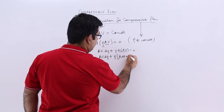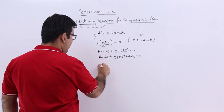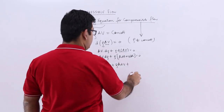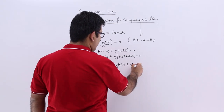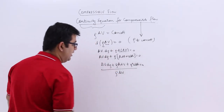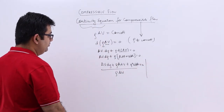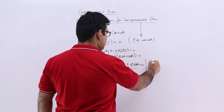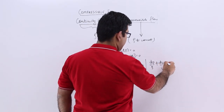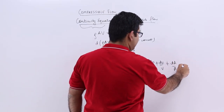Expanding fully: a·dv plus v·da equals zero, and a·dρ plus ρ·dv plus ρ·v·da equals zero. Now I will divide the entire equation by ρav. This gives us the equation of the form: dρ/ρ plus dv/v plus dA/A equals zero.